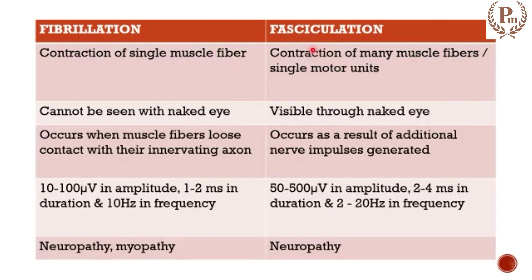Fasciculation is a contraction of many muscle fibers. We cannot see fibrillation with our naked eye, but we can see fasciculations with our naked eye. Fibrillation occurs when muscle fibers lose their contact with the innervating axon, whereas fasciculation occurs as a result of additional nerve impulses being generated.